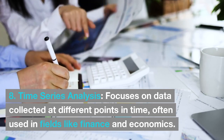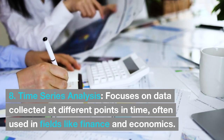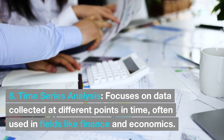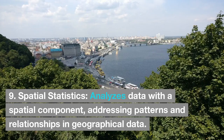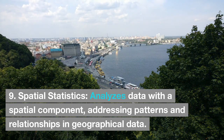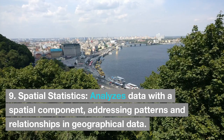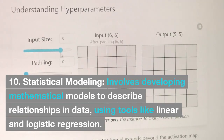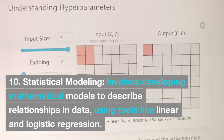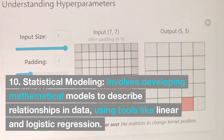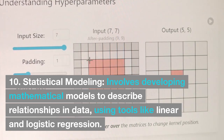Time series analysis focuses on data collected at different points in time, often used in fields like finance and economics. Spatial statistics analyzes data with a spatial component, addressing patterns and relationships in geographical data. Statistical modeling involves developing mathematical models to describe relationships in data, using tools like linear and logistic regression.